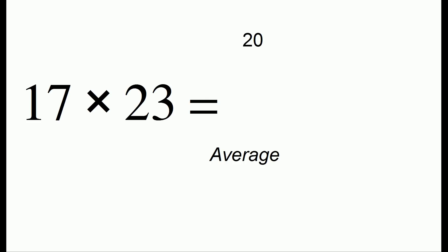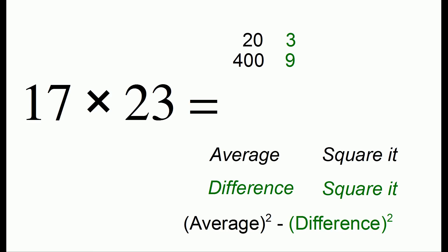The next step is you want to mentally square that average. So 20 squared is 400. The third step is to look at the difference from the average. 17 and 23 are both 3 away from the average. We then are going to square that difference, and 3 squared is 9. The final step is we're going to take the square of the average minus the square of the difference. So 400 minus 9 gets us to our answer of 391.